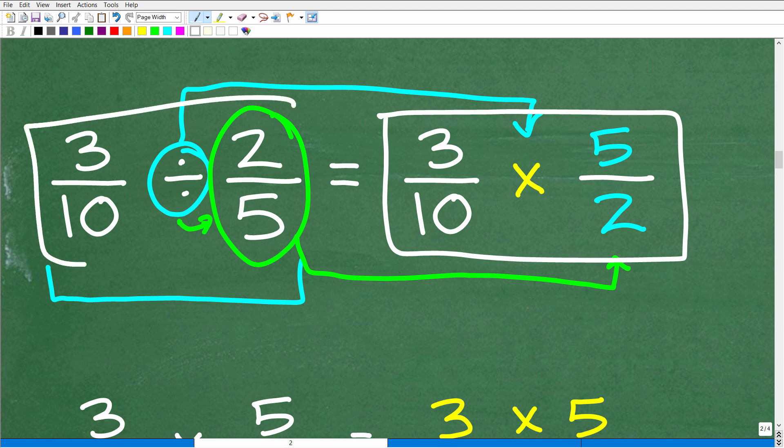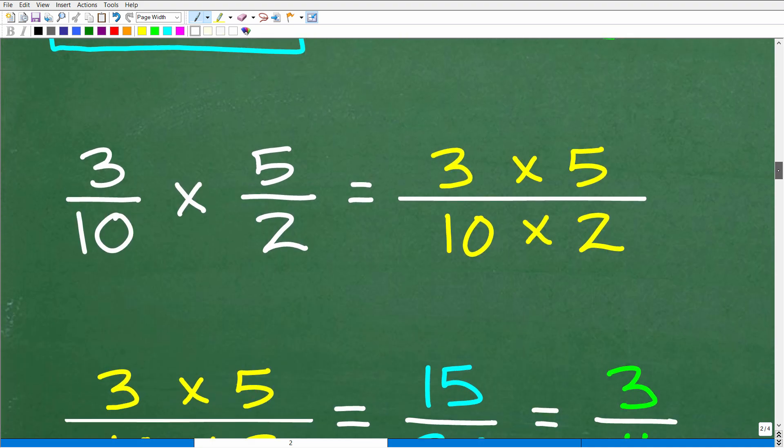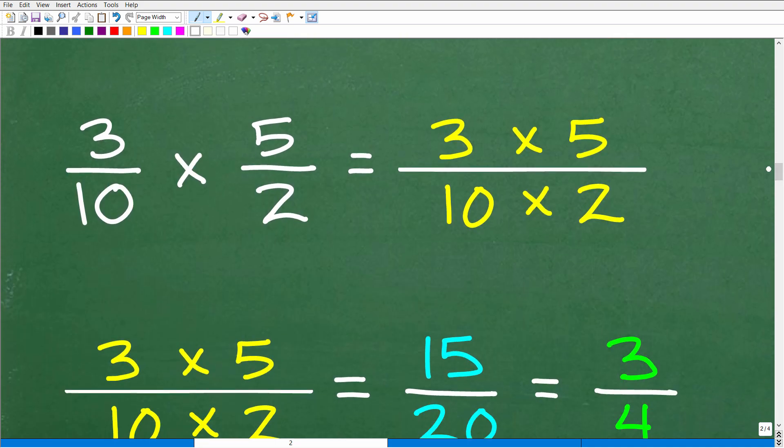Okay, so now what we have is an equivalent problem. If we figure this out, it's the same thing as doing this. So now we have to answer this question, 3 over 10 times 5 halves, okay? And this is actually quite easy. So let's talk about how to multiply fractions.